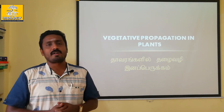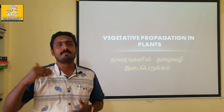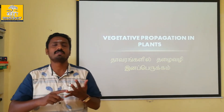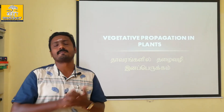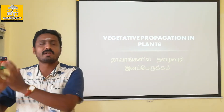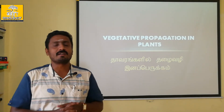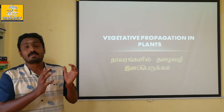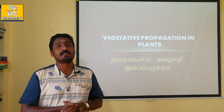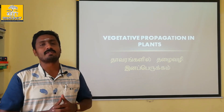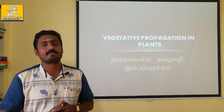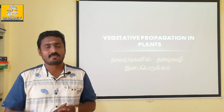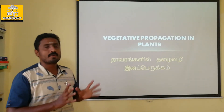The reproductive parts include the flower, fruit, and seed. The third part is the vegetative part, and when reproduction occurs through vegetative parts, it is called vegetative propagation.